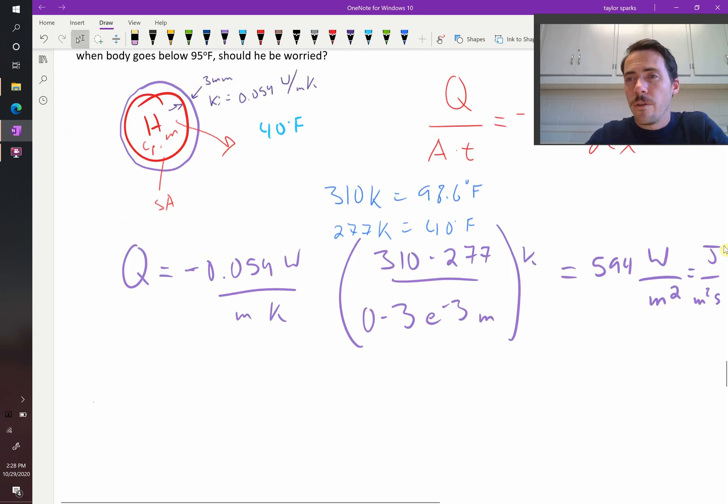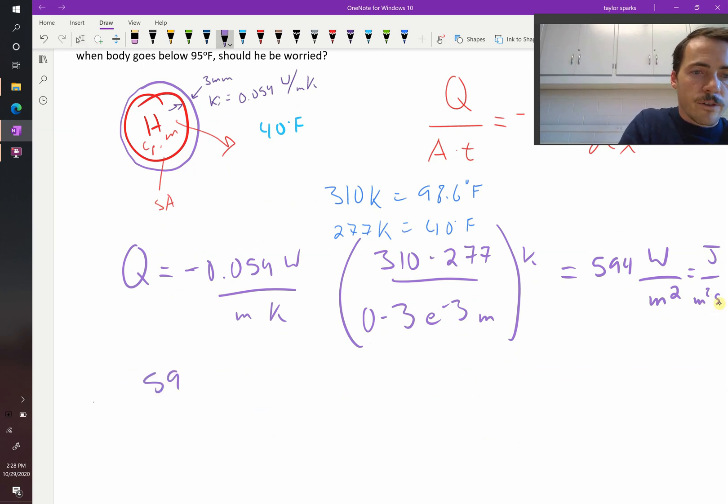So now, how do we figure out the total amount of joules lost? Well, we have to take into account the surface area and how long they're in the water. Great, we can do that. So we're going to multiply that 594 joules per meter squared per second. We're going to multiply that by 1.9 meters squared. Multiply that by 35 minutes. Multiply that by 60 seconds in a minute.